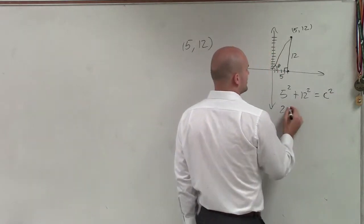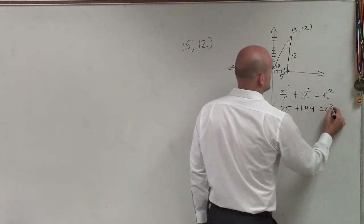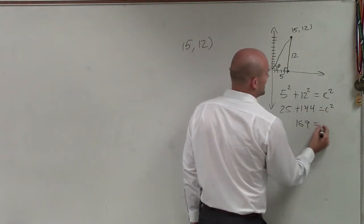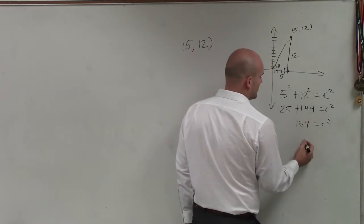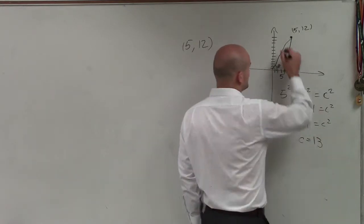But anyways, I'll just show you real quick. 25 plus 144 equals c squared. That equals 169 equals c squared. Therefore, c equals the square root of 169, which is 13.